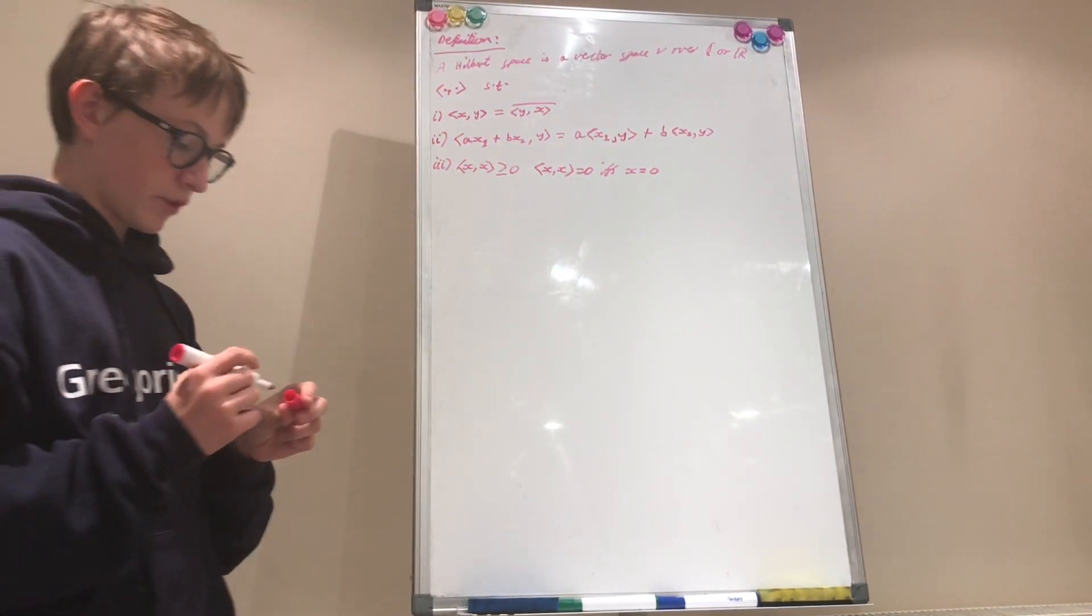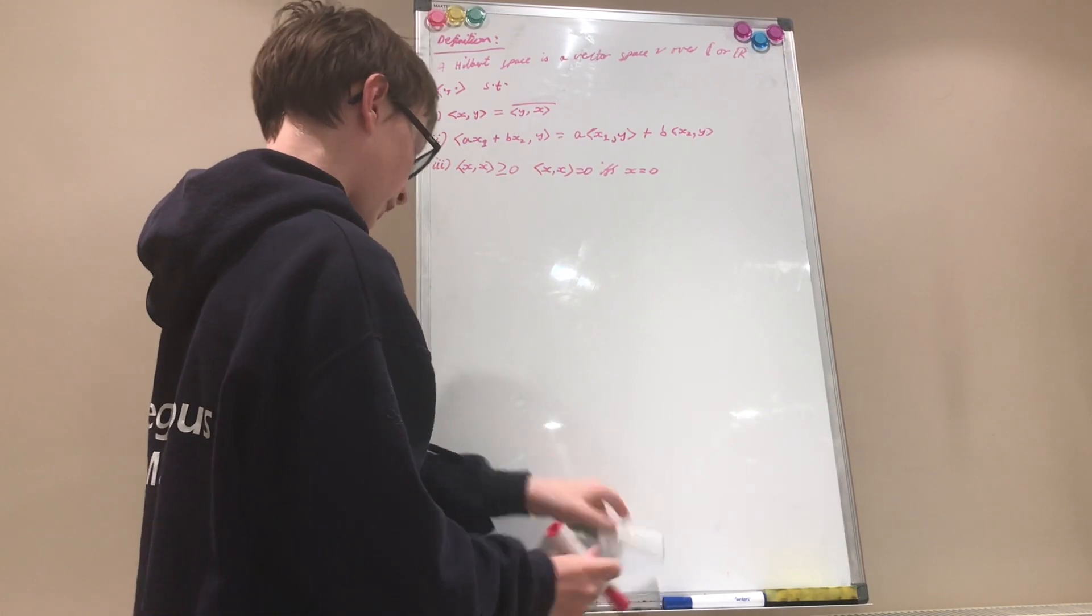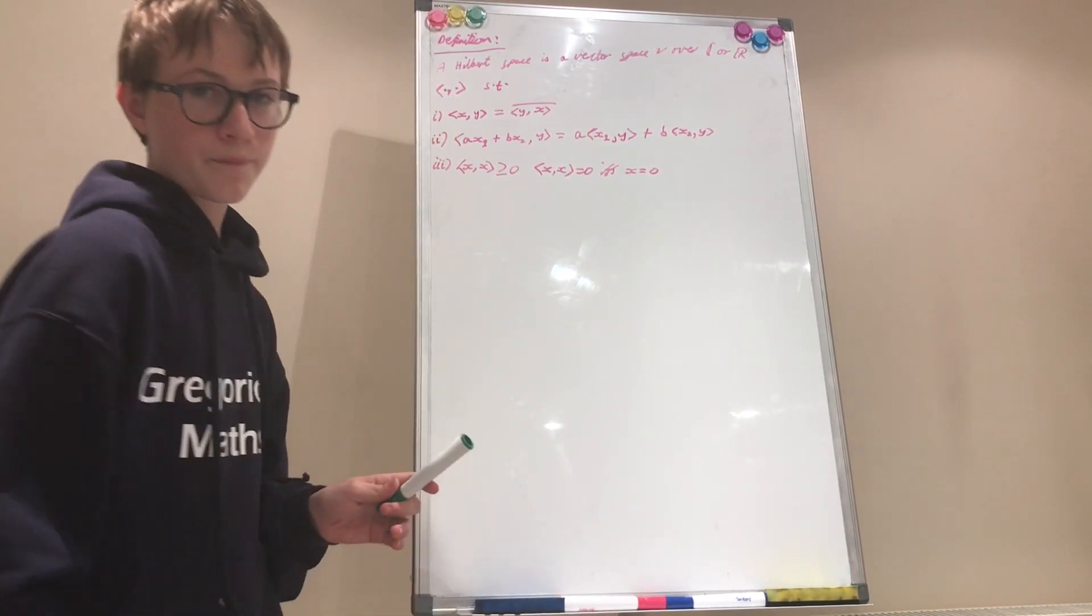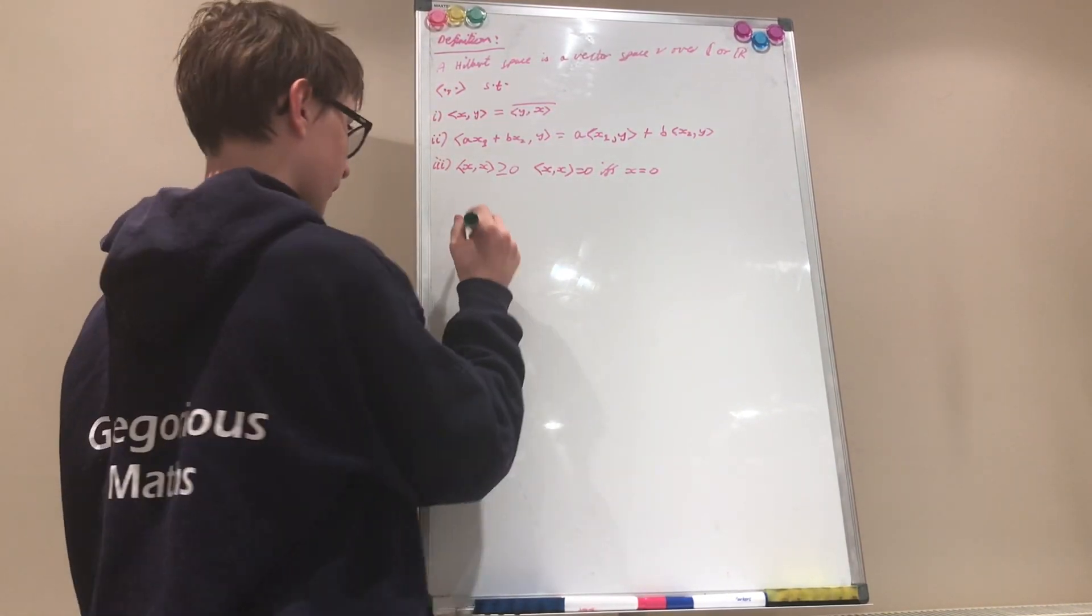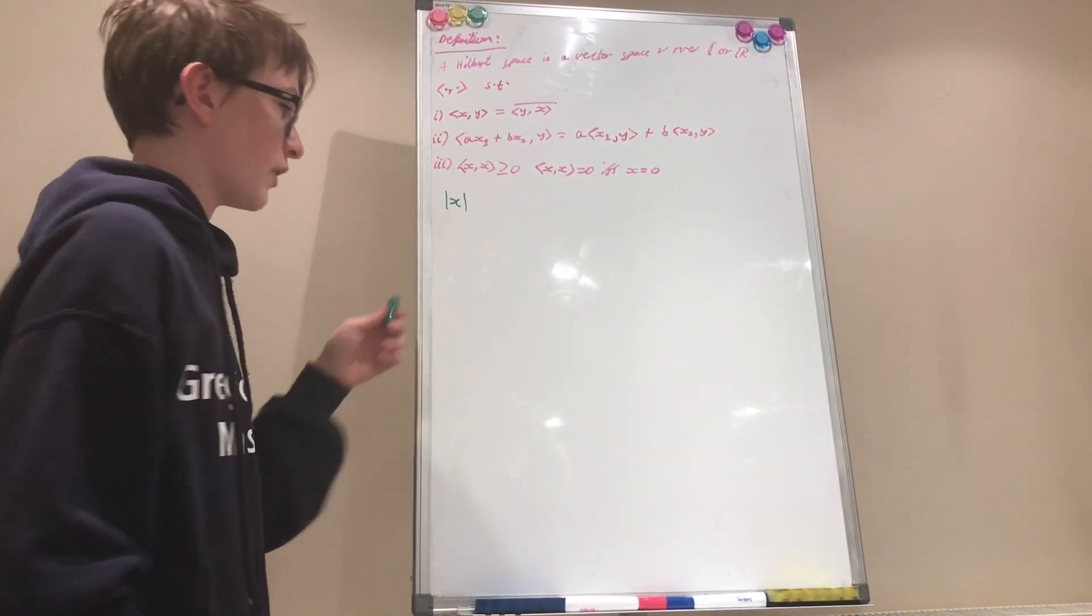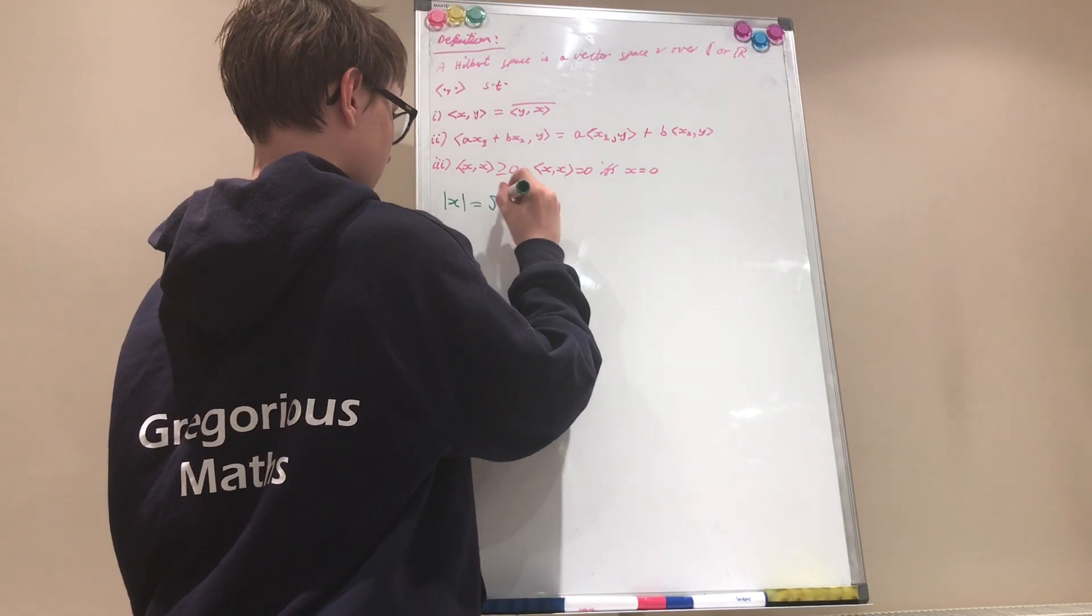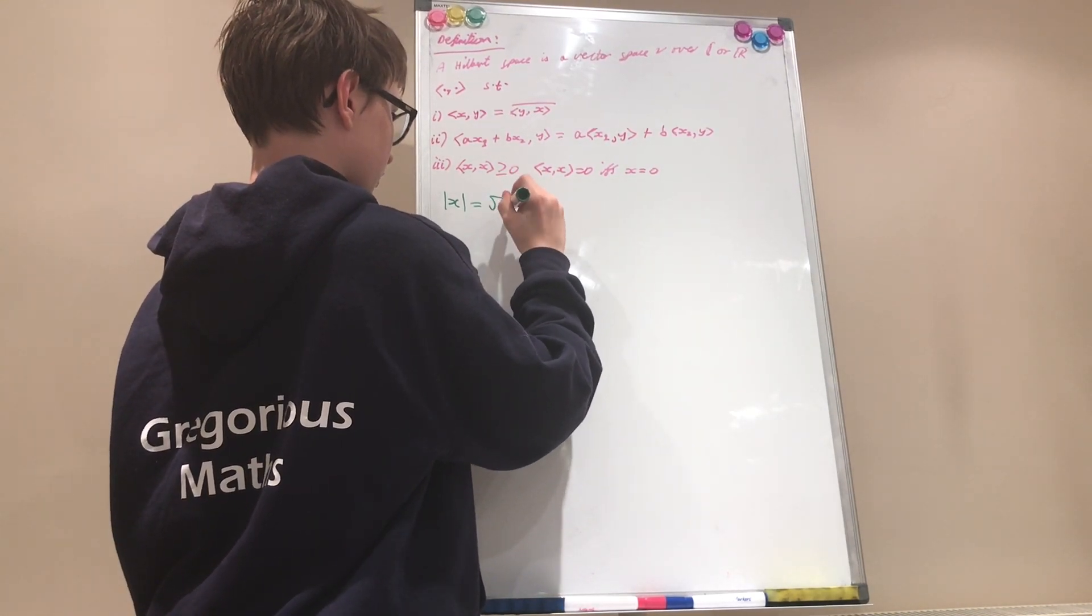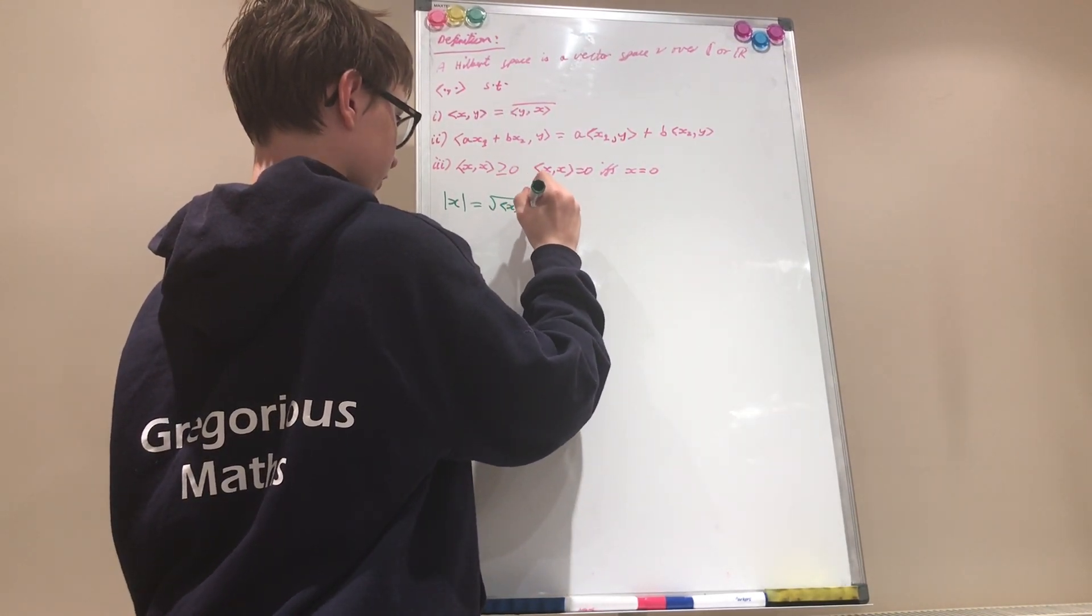Alright, these are the axioms. Now there are some more definitions. For example, the norm of x is denoted like this: the norm of x is equal to the square root of x inner product with itself.